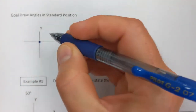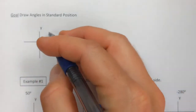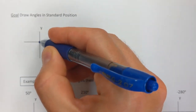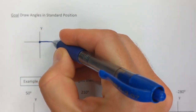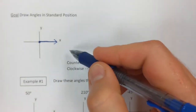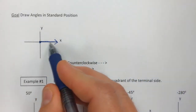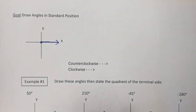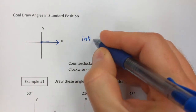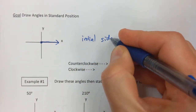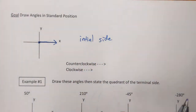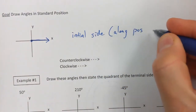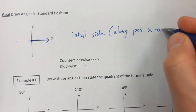An angle is really just the opening distance between two rays — there's always two sides to an angle. In standard position, we always draw our first ray along the x-axis in a positive direction. This is called the initial side of our angle, and that initial side is along the positive x-axis.